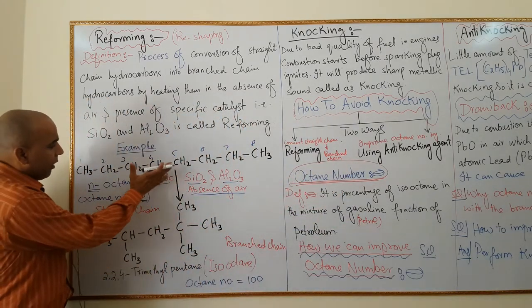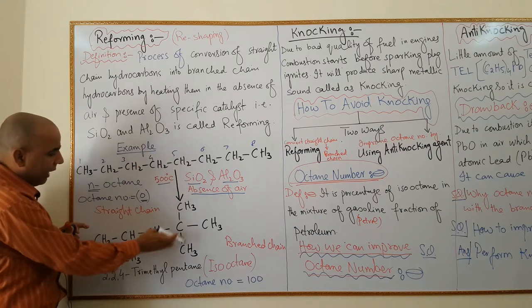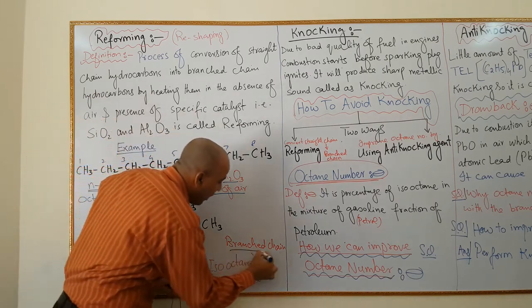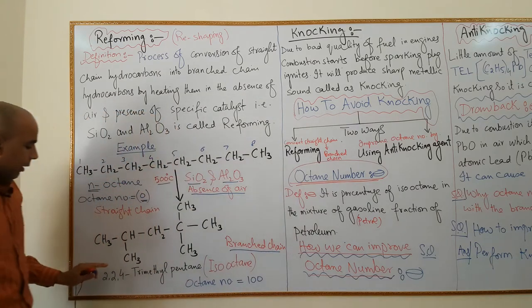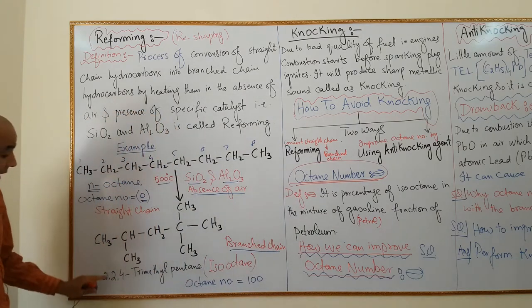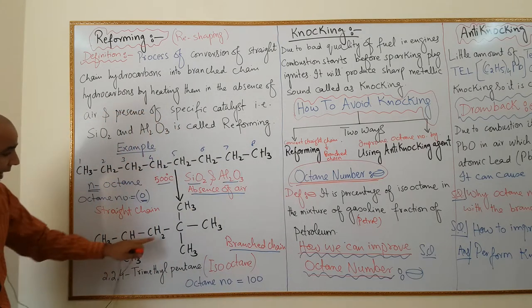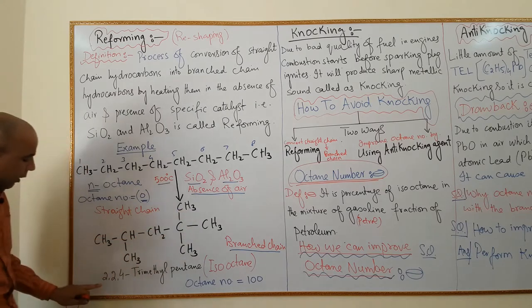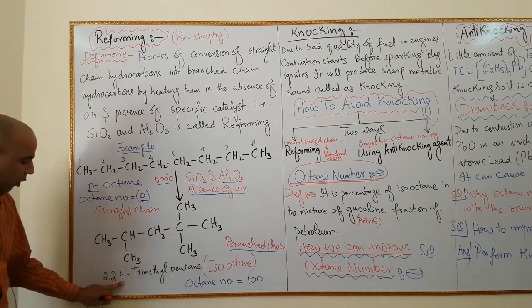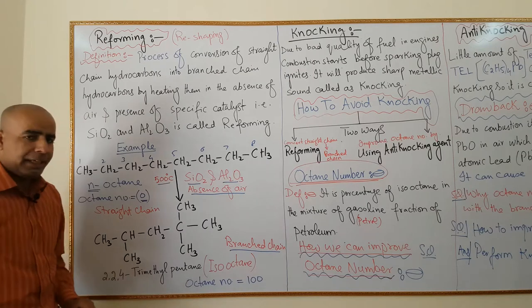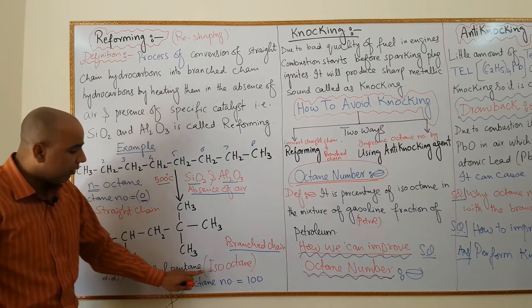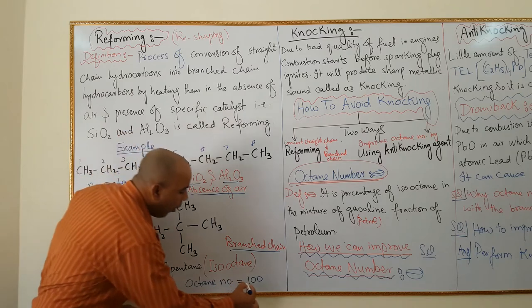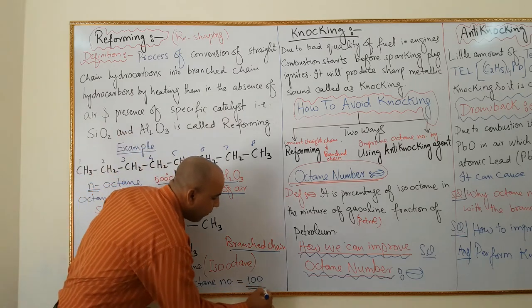When we convert n-octane into iso-octane — the branched chain form — its IUPAC name is 2,2,4-trimethylpentane. It has three branches. This compound is called iso-octane and it has an octane number of 100.